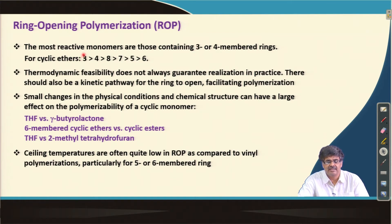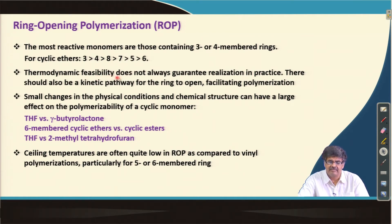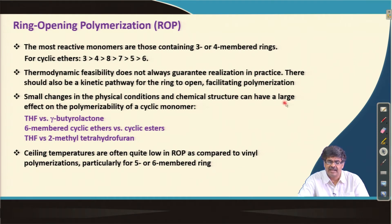For cyclic ethers, the tendency to polymerize according to ring size follows the order: 3, 4, then 8, 7, 5, 6 — with the 6-membered ring having the least tendency due to minimum ring strain. Thermodynamic feasibility does not always guarantee realization in practice because there must also be a kinetic pathway for ring opening. Small changes in physical conditions and chemical structure can have a large effect on the polymerizability of cyclic monomers. For example, THF and polybutyrolactone are both 5-membered rings, but THF can be polymerized cationically while the lactone cannot.